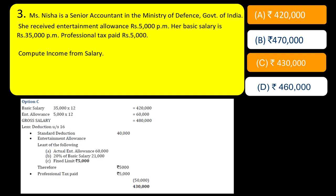From the gross salary of Rs. 4,80,000, apply Section 16 deductions. First is standard deduction of Rs. 40,000; second is entertainment allowance deduction — the least of three limits: actual entertainment allowance, one-fifth (20%) of basic salary, or the fixed limit of Rs. 5,000. The least is Rs. 5,000. Third deduction is professional tax paid of Rs. 5,000. Total Section 16 deductions are Rs. 50,000, giving an answer of Rs. 4,30,000 — option C.